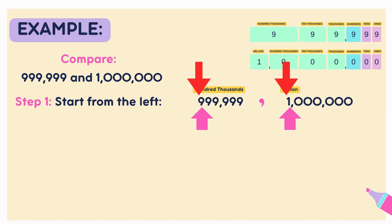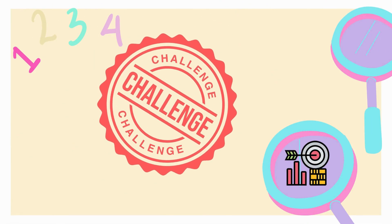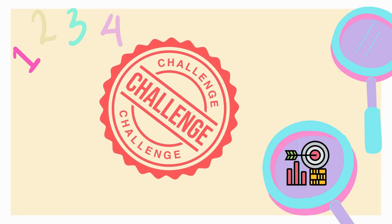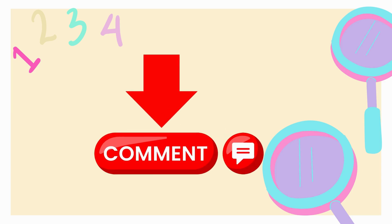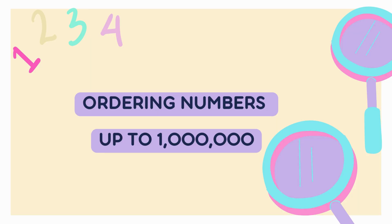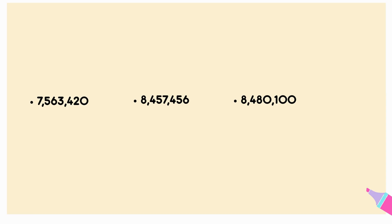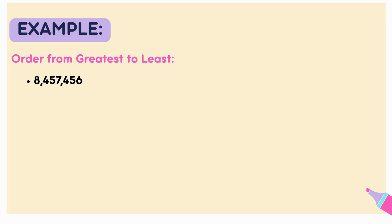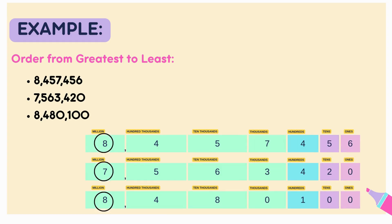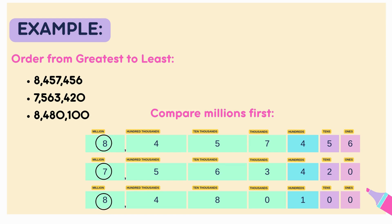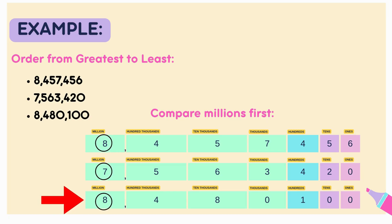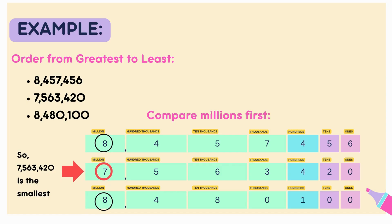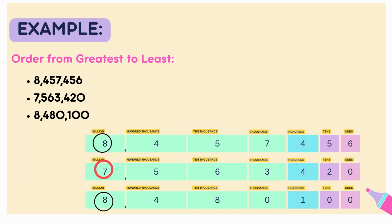It's like reading a book — we start at the beginning. A quick challenge: can you think of another number that's just a little less than 1,000,000? Feel free to post it in the comment section below. Now let's order these three big numbers from greatest to least: 8,457,456 — 7,563,420 — 8,480,100. Start by looking at the millions place. The first number has 8,000,000. The second number has 7,000,000. The third number also has 8,000,000. So right away we know 7,563,420 is the smallest. Let's set it aside for now.